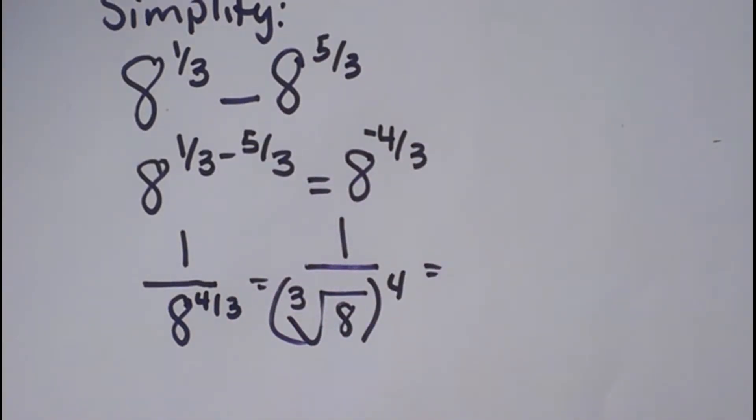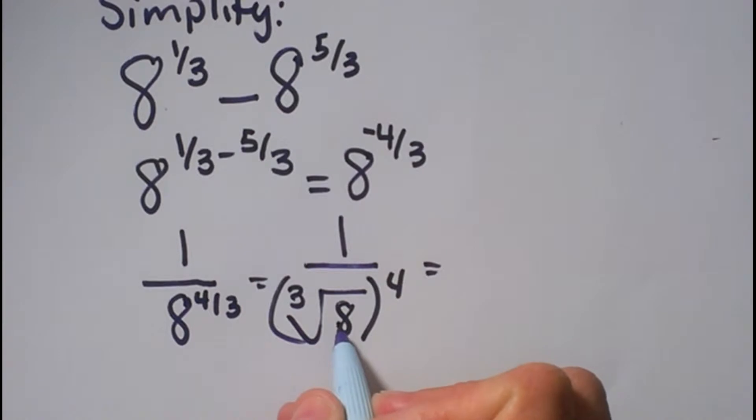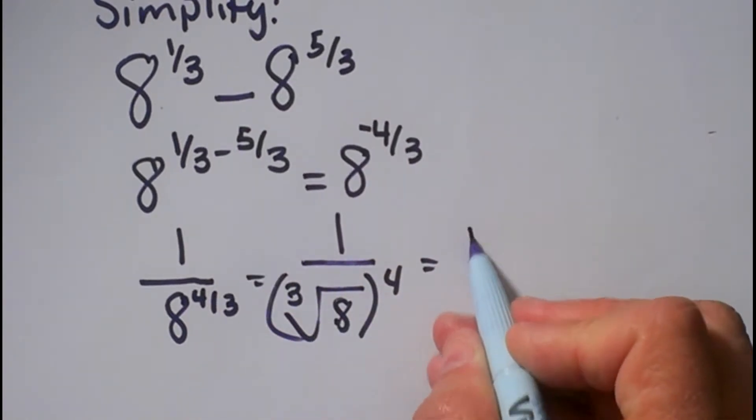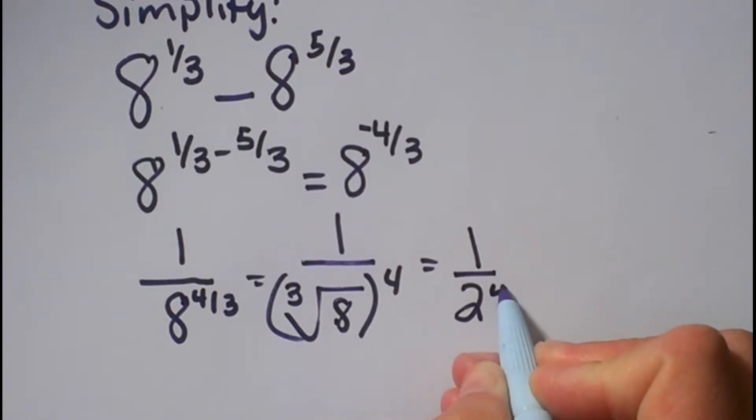So how does that simplify? Well, the cube root of 8 is 2, because 2 times 2 times 2 is 8. So that means the cube root of 8 is 2. So I have 1 over 2 to the 4th.